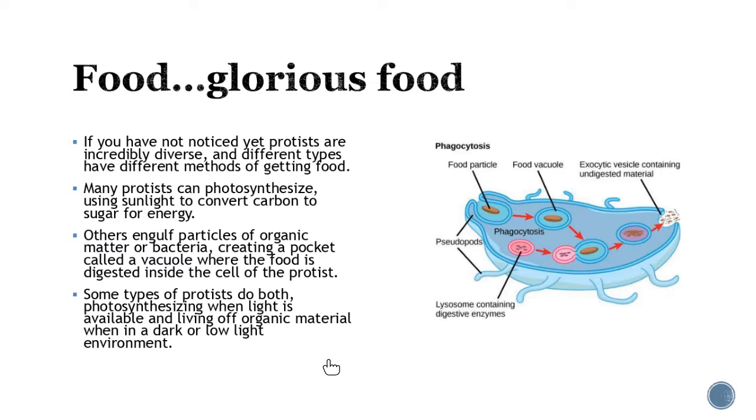How do these guys eat? As I told you, they're diverse and they have different methods for getting food. Some of them will go through the process of photosynthesis by using light to convert carbon to sugar for energy. Others they have to engulf other bacteria through the process of phagocytosis. They're going to engulf a food particle and put it into a food vacuole. That is going to merge with the lysosome which has a digestive enzyme and it'll break it down. The cell will take what it needs and then get rid of the waste products. Some of them are going to do both photosynthesis and phagocytosis, and it just depends on what the environment is and what resources you have at that time.